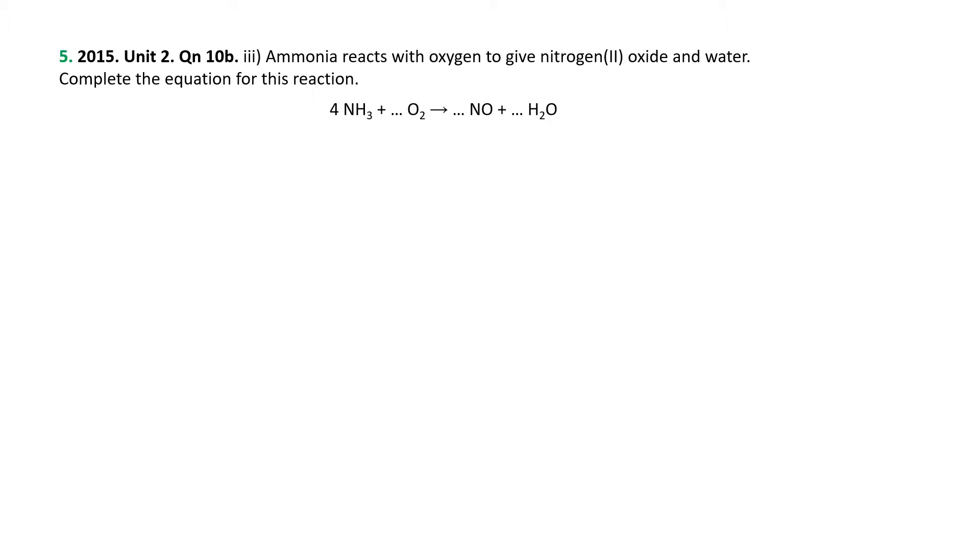First one, ammonia reacts with oxygen to give nitrogen to oxide and water. So there are the formulas. Complete the equation and they very nicely give us that we're having four NH3s. Now, first thing I always like to do on a computer is let's get some color coding in so we can distinguish it. So nitrogen's in blue, hydrogens in sort of goldiness and oxygens in red.